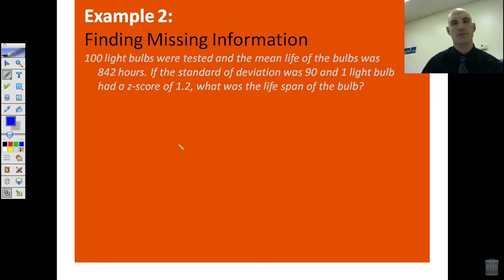In the next example, we're going to be finding missing information. In all of your previous classes to this, and in all your subsequent classes, you will have problems where they'll give you the answer and they'll say you need to find what it is that we started with. 100 light bulbs were tested. The mean life of the bulbs was 842 hours. If the standard deviation was 90 and one light bulb had a z-score of 1.2, what is the lifespan of that bulb?